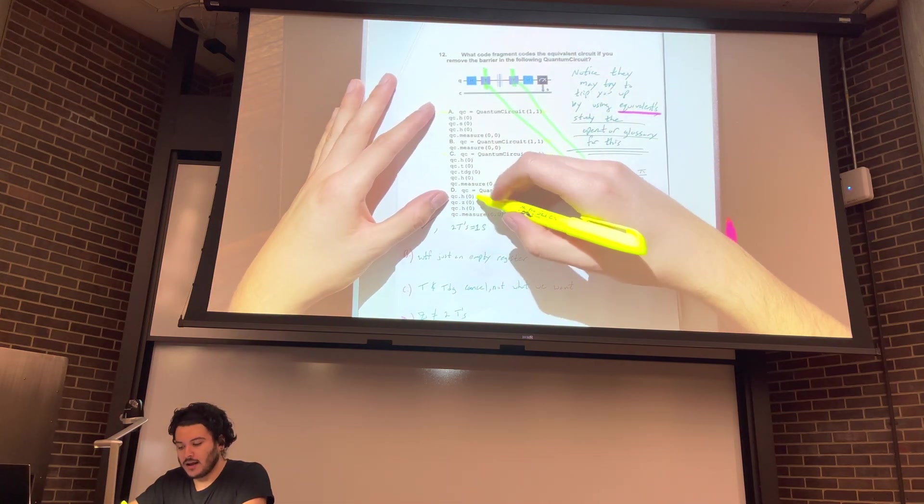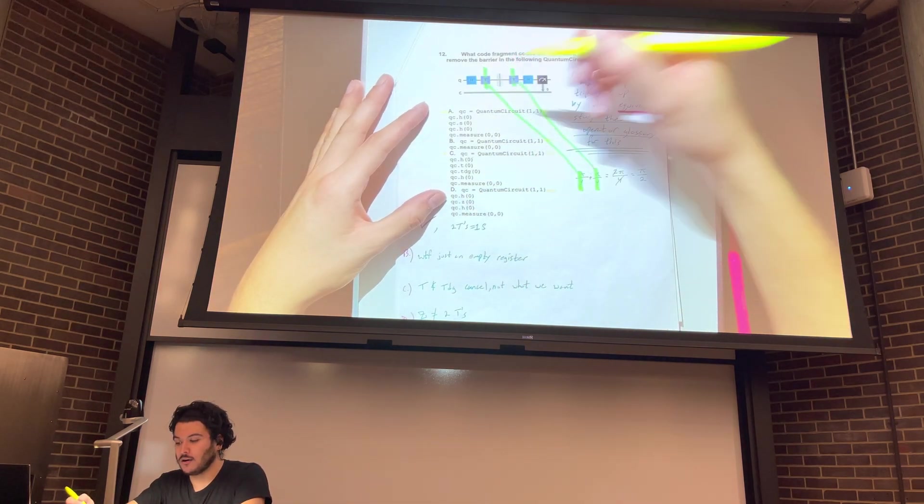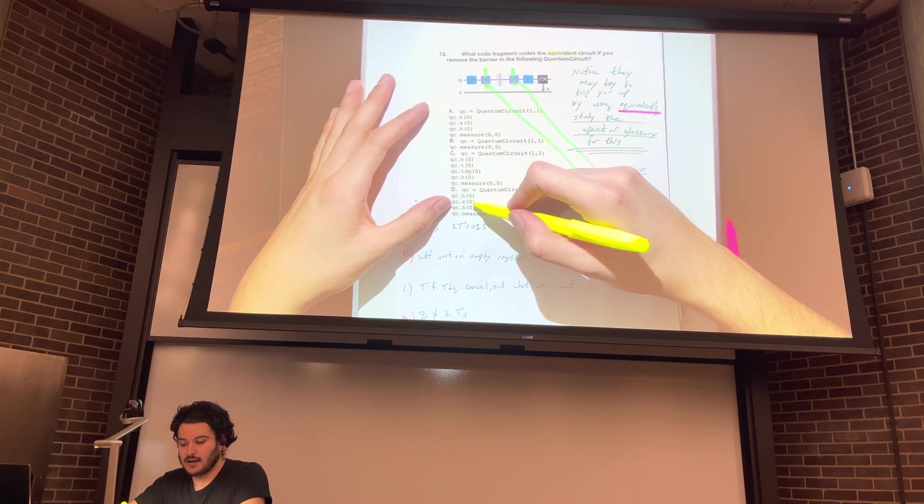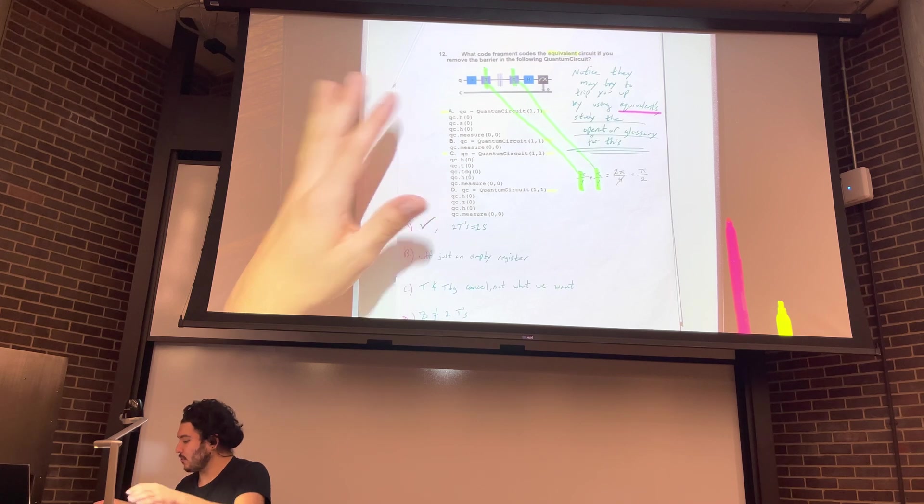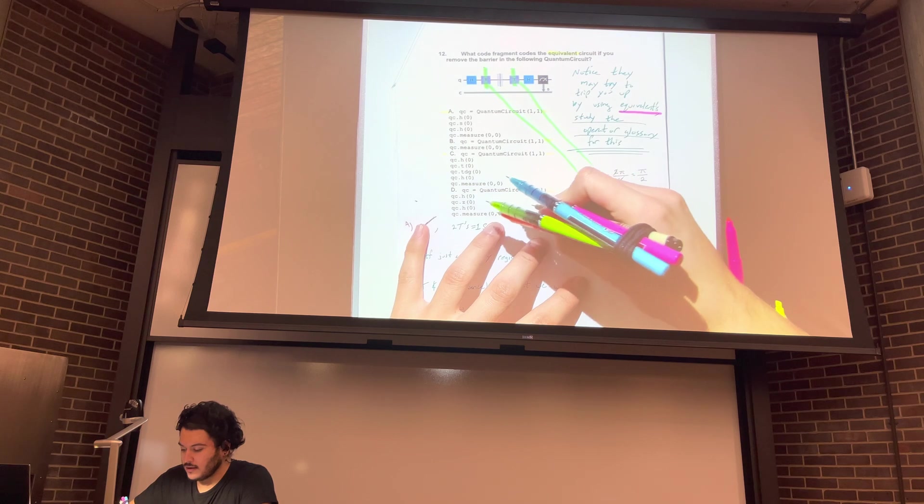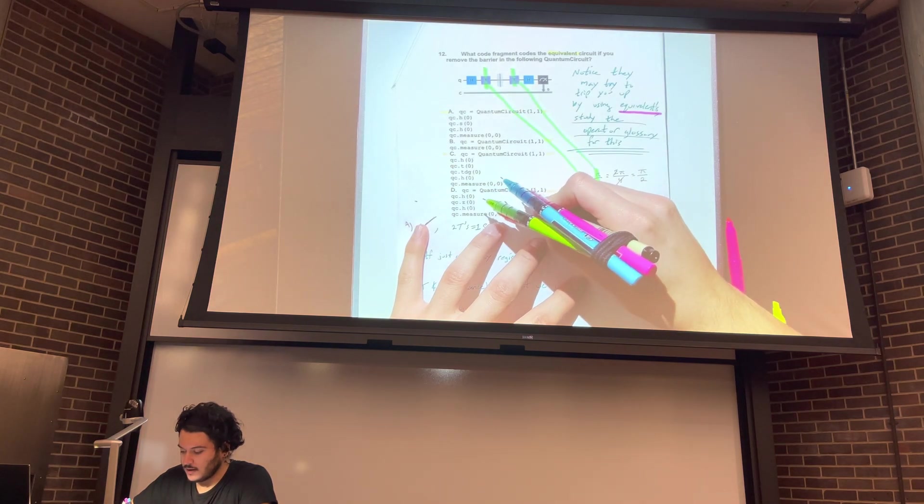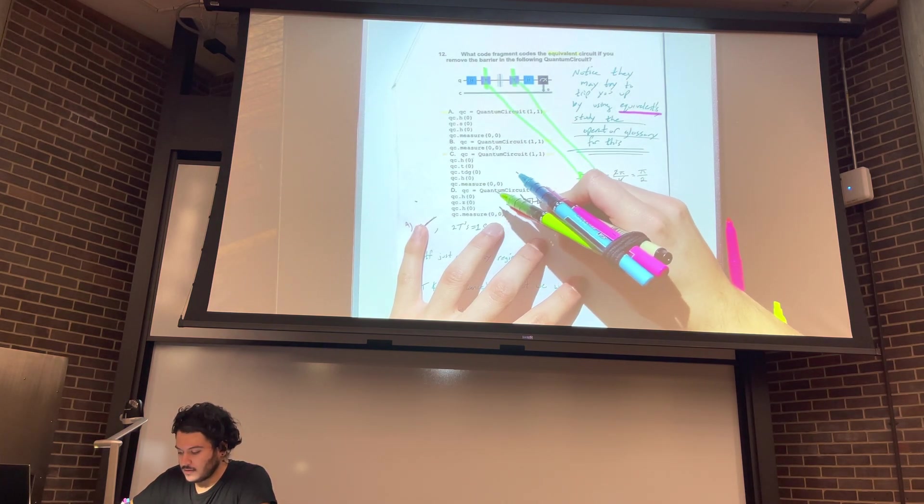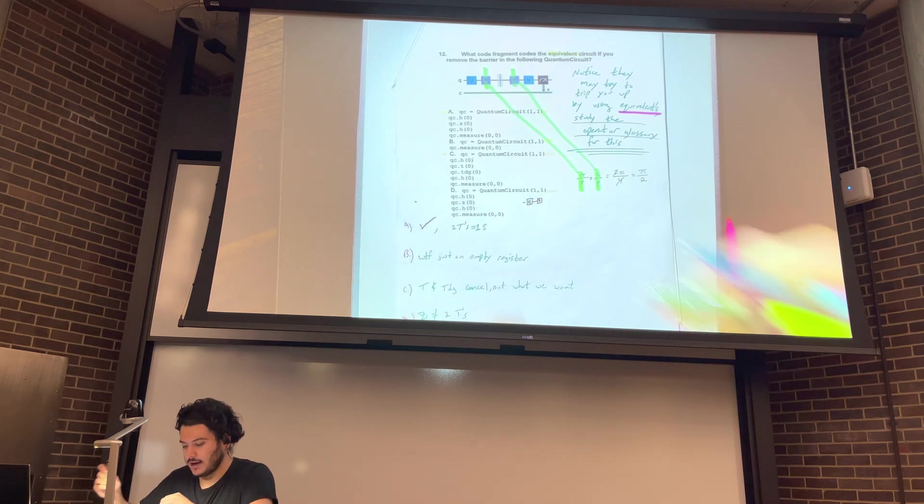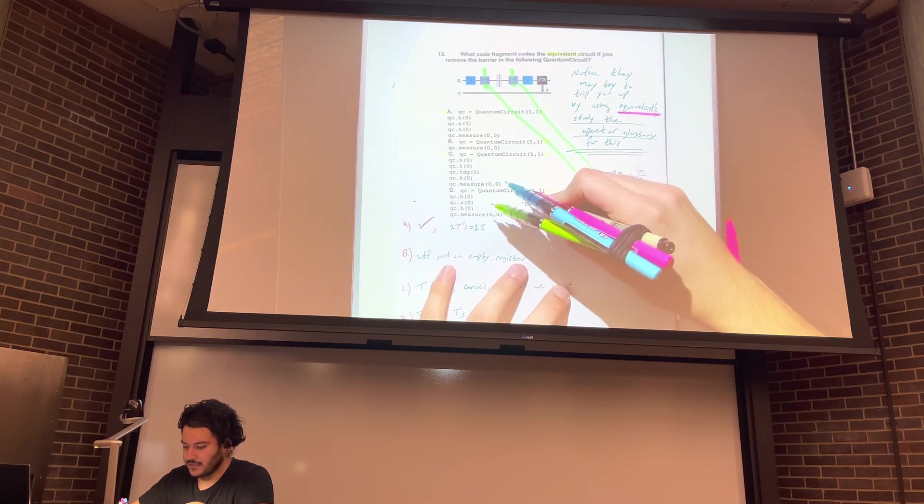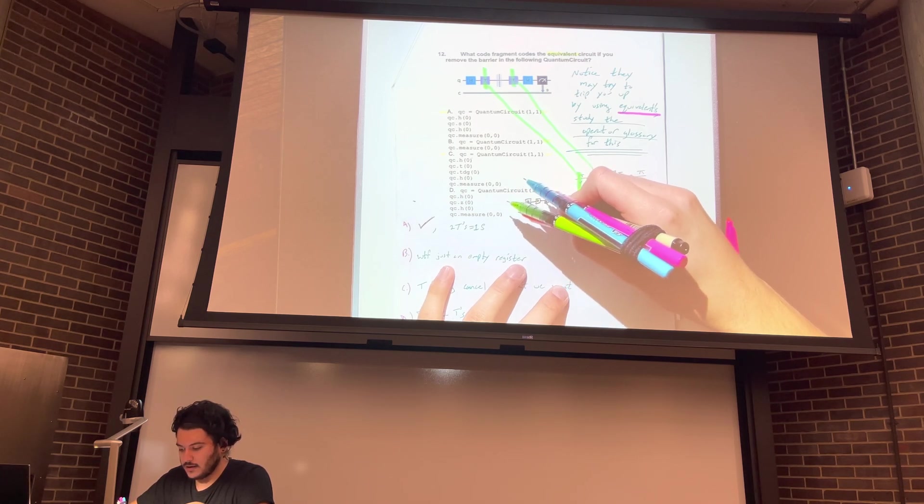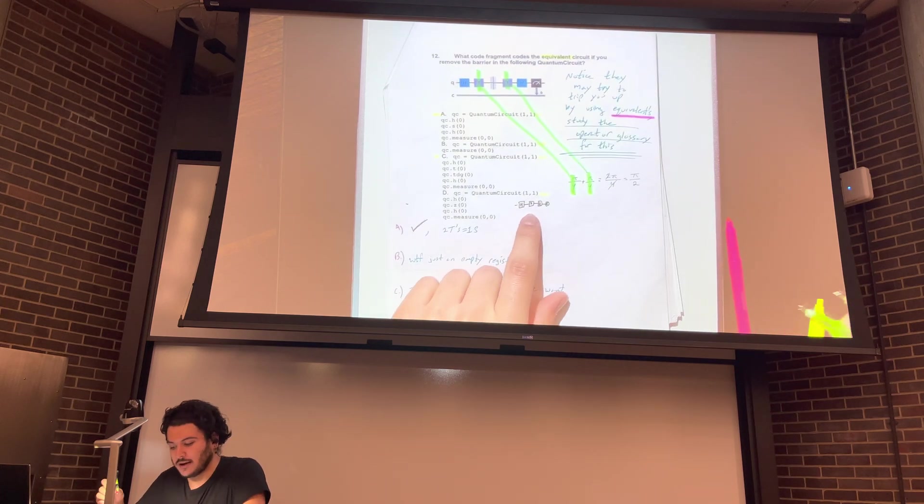So D, now that I know it's safe, we place a Hadamard. Oh, so we're looking for the equivalent. A Hadamard, a Z, a Hadamard, and then a measure. So that would look like this. Hadamard, Z, Z actually. I think Z might be funky, but we'll leave it there. H and then measure. So that's what that would look like.